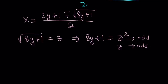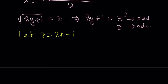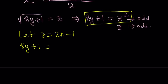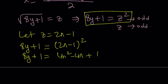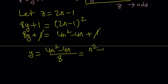Since z is odd, let z equal 2n minus 1, where n is an integer — this is how we express odd integers. We'll square it, so replacing z with 2n minus 1 gives 8y plus 1 equals 2n minus 1 squared, which is 4n squared minus 4n plus 1. The 1 cancels out on both sides, and dividing both sides by 8 — since 4n squared minus 4n is 4 times n squared minus n — we get y equals n squared minus n divided by 2.